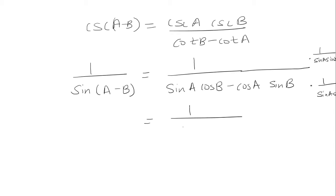For the top, I'm going to split it up. I'm going to have 1 over sine of A times 1 over sine B. So basically I'm just breaking up these two. So 1 over sine A times sine B is 1 over sine A times 1 over sine B.